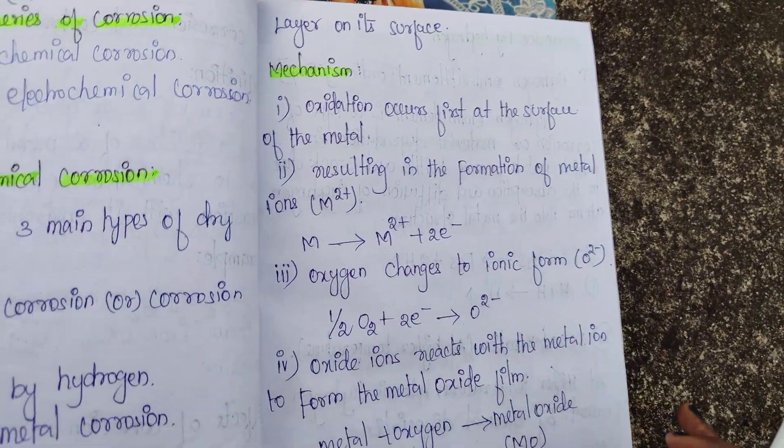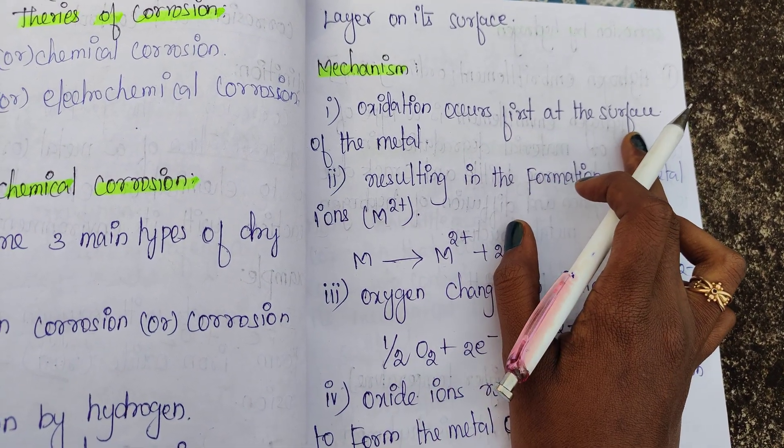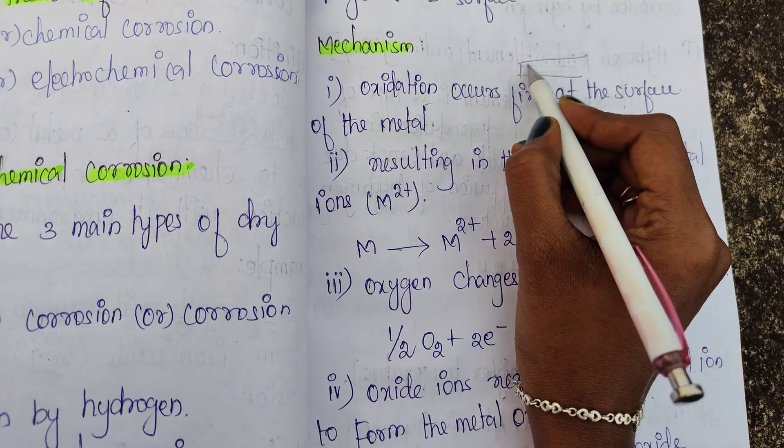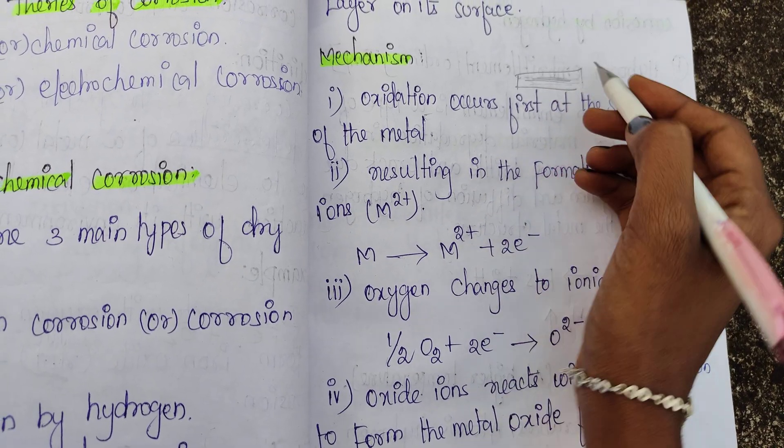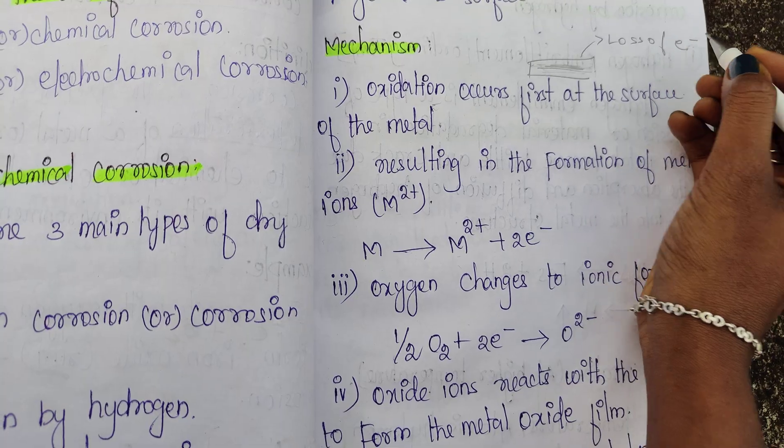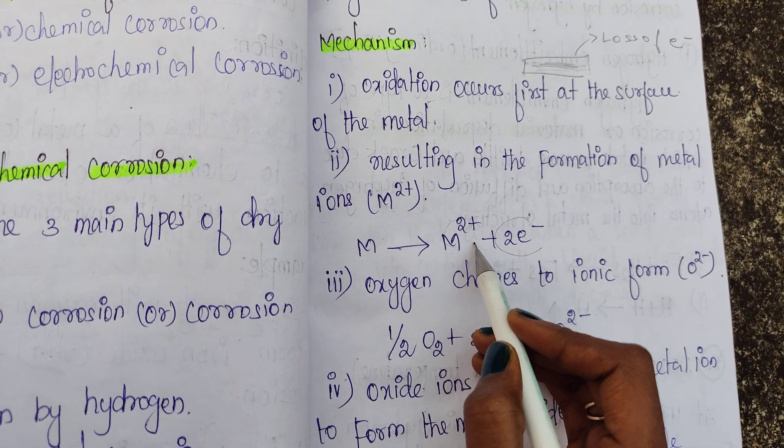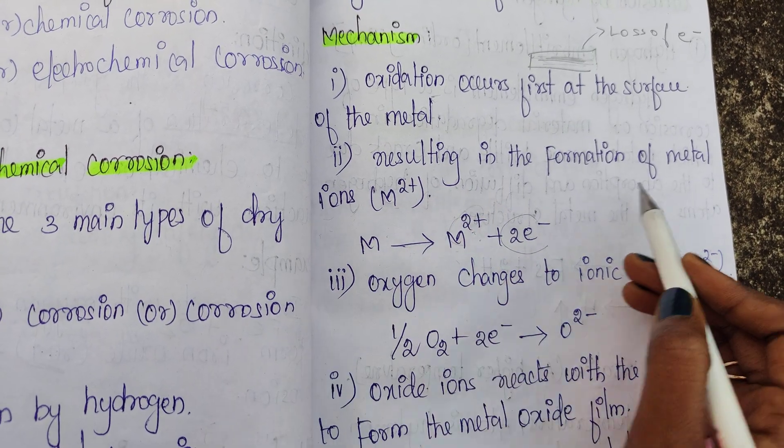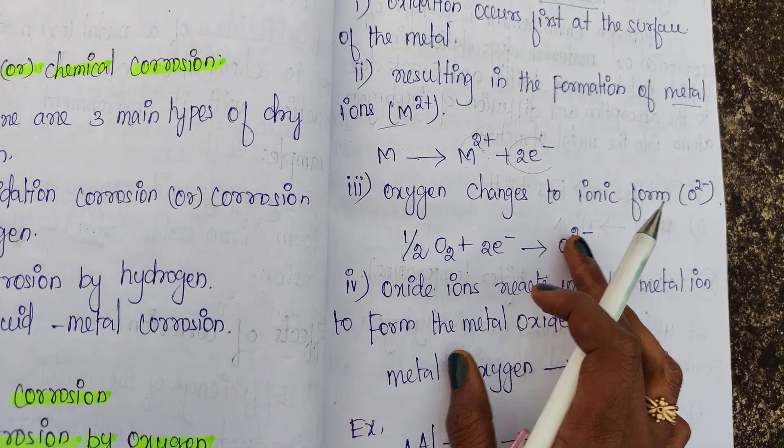Looking at the mechanism: oxidation occurs at the surface of the metal. We know that oxidation is loss of electrons. If metal loses electrons, it will become M²⁺ ion.